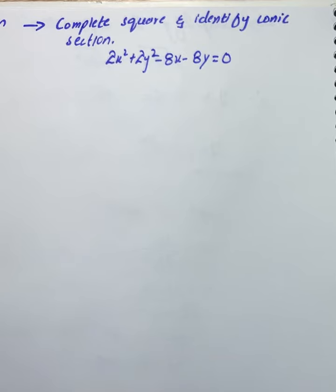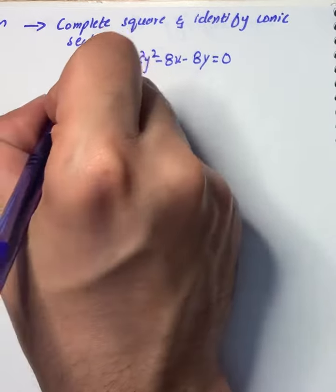We have a question that says complete the square and identify the conic section. We'll start with the equation 2x² + 2y² - 8x - 8y = 0. We will first of all factor.